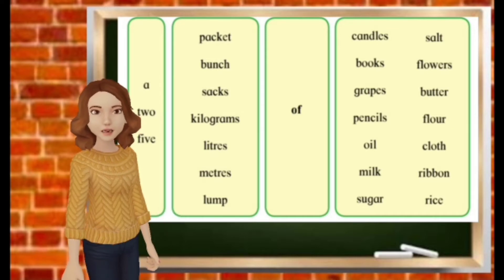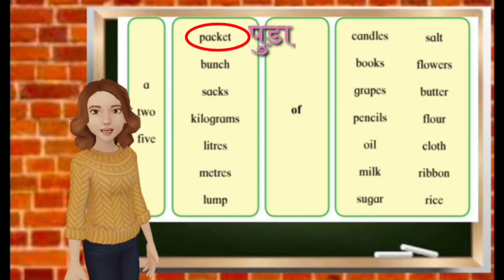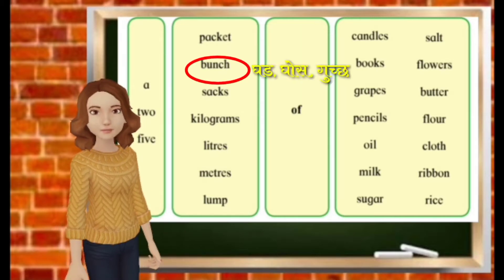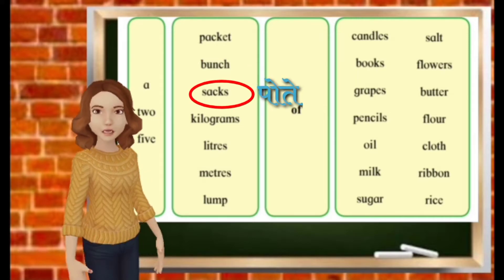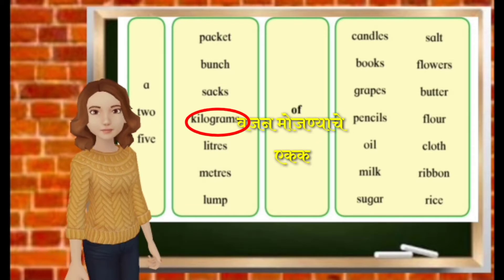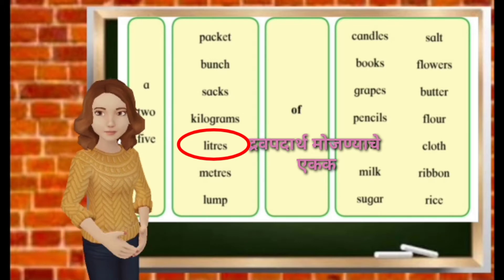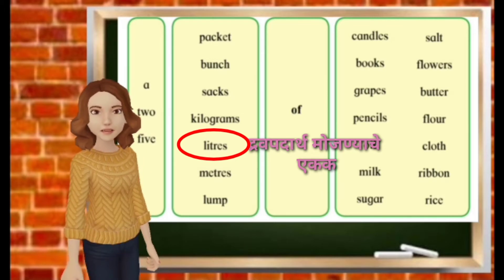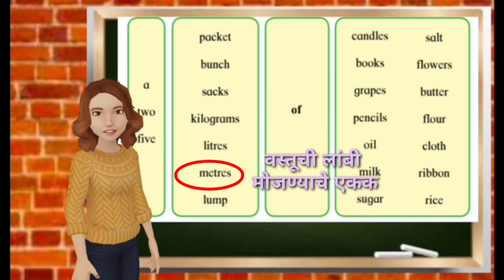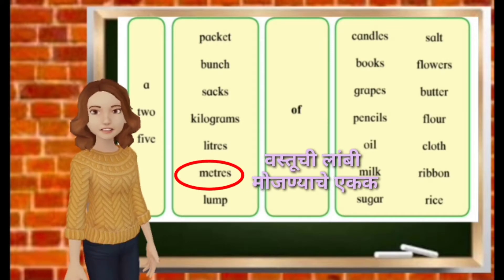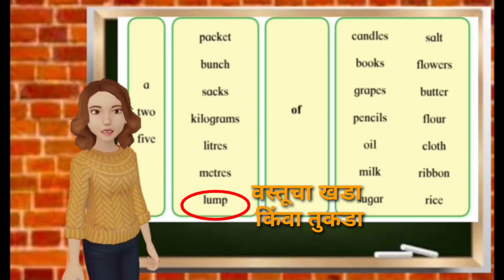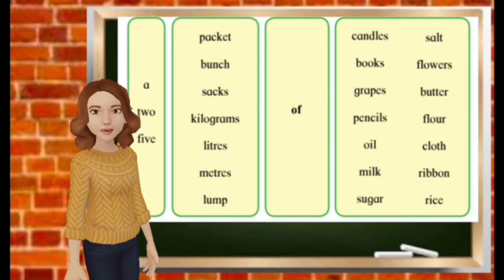We see the second column. Packet means 'puda', bunch means 'guchha', sack means 'poti', kilograms is the unit of measurement for weight, liter is the unit of measurement for liquid, meter is the unit of measurement for length, and lump means a solid piece or chunk. Let's now make meaningful sentences.